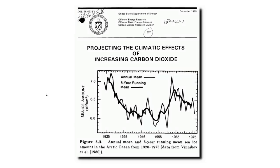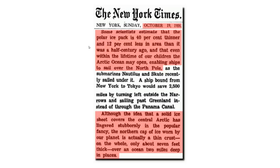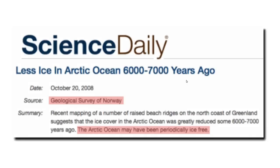This graph is from the 1985 Department of Energy report, which was the predecessor to the United Nations Intergovernmental Panel on Climate Change. They showed that Arctic sea ice extent was very low during the 1930s, 1940s, and 1950s. In 1958, the New York Times said that Arctic sea ice was disappearing very rapidly and predicted that within a generation, the Arctic Ocean may open, enabling ships to sail over the North Pole. That didn't happen. But if we go back to around the time when Stonehenge was built, the Arctic Ocean may have been ice-free. Carbon dioxide levels were very low then, and that pretty much wrecks the global warming story.